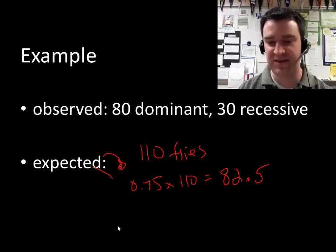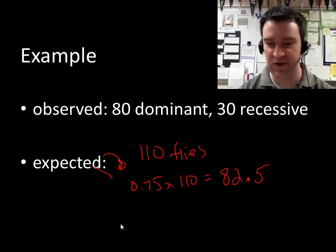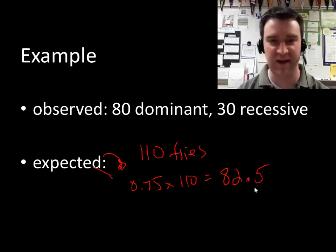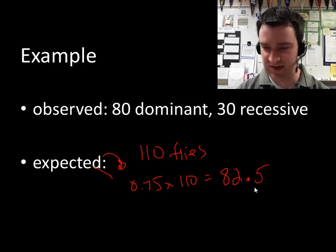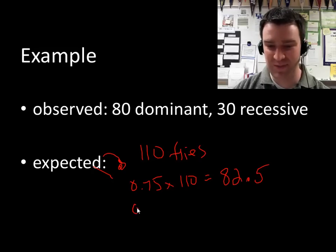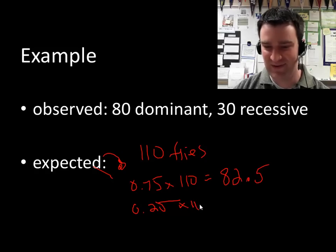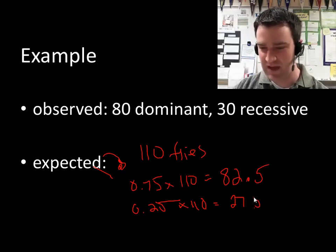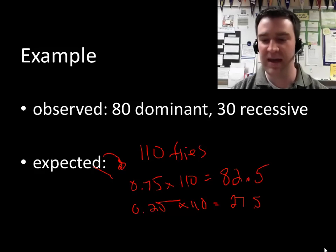Some students ask whether it's good to round. You can either round or not depending on what kind of result you get. If you get just one decimal like a half, I'd be tempted to leave it as is. If you're asked to calculate this on the AP test, they'll provide a range of acceptable answers. Then doing 0.25 times 110 gives us 27.5. So our expectations are 82.5 dominant flies and 27.5 recessive flies.